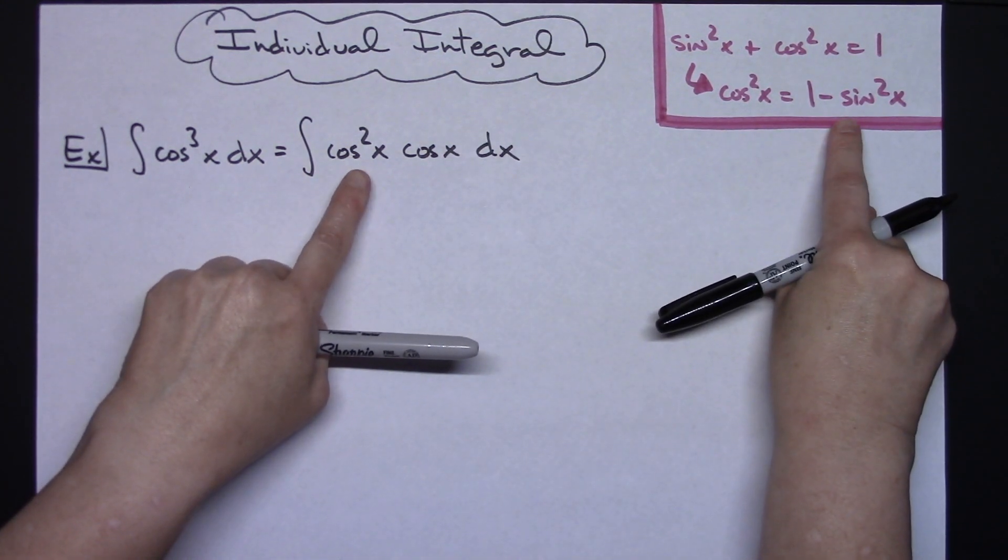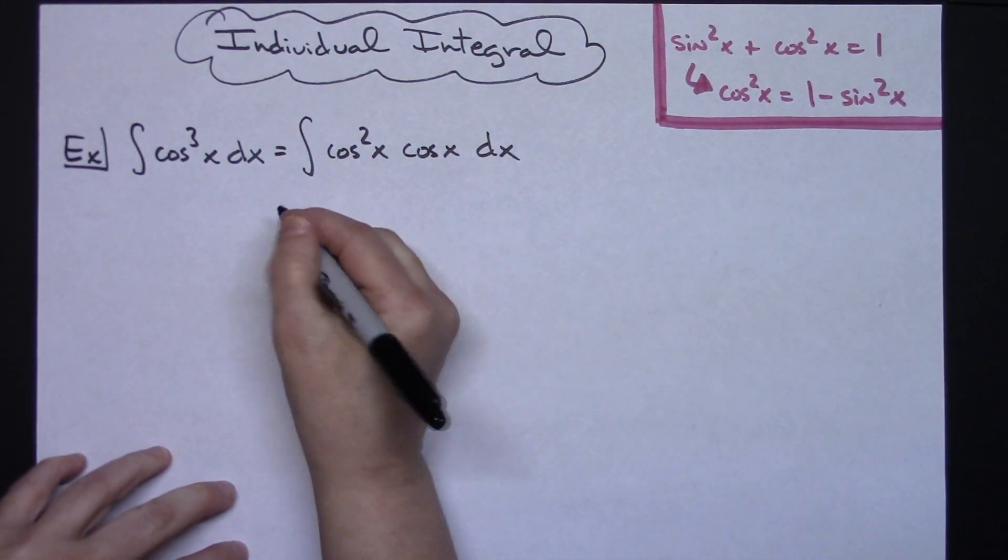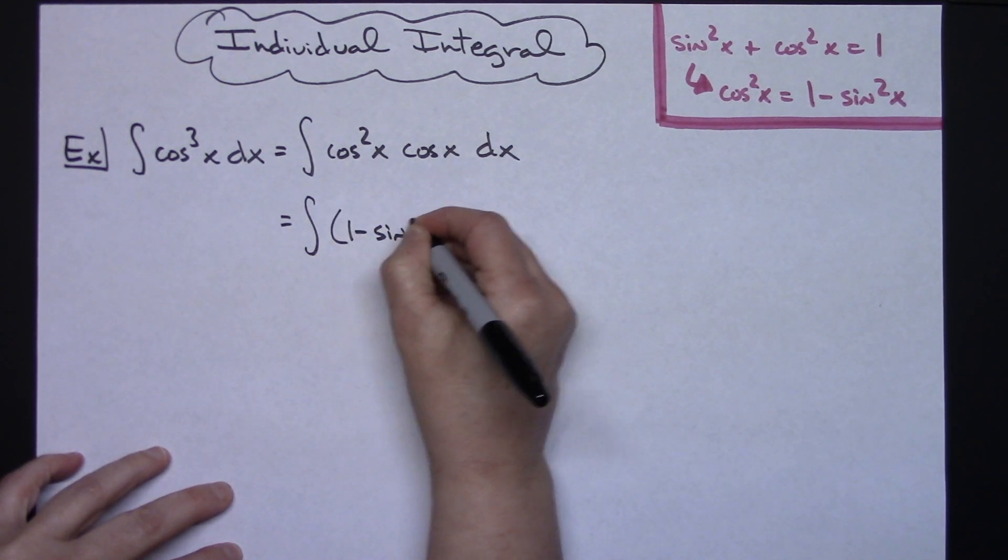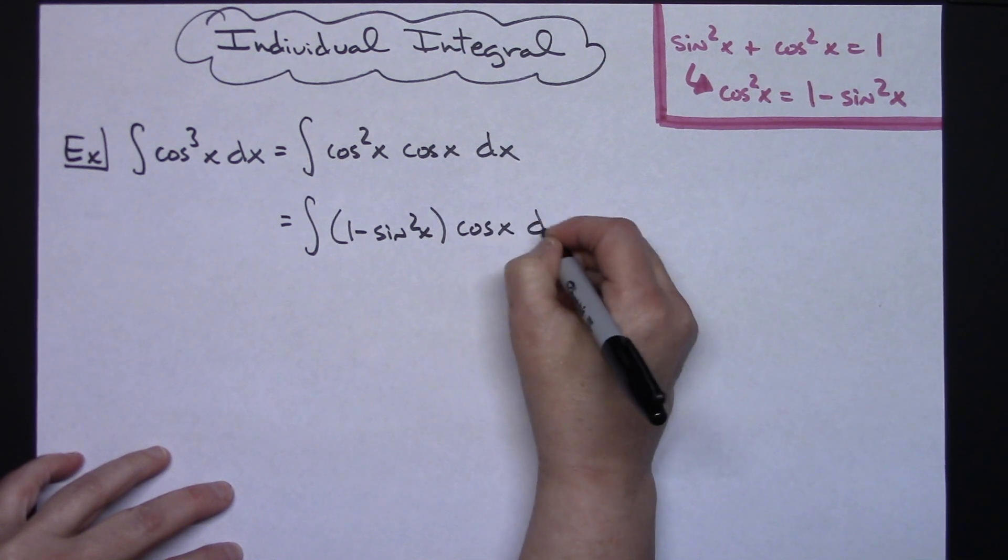That's going to allow me to do the substitution of 1 minus sine squared x. So the integral of 1 minus sine squared x times the cosine x dx.